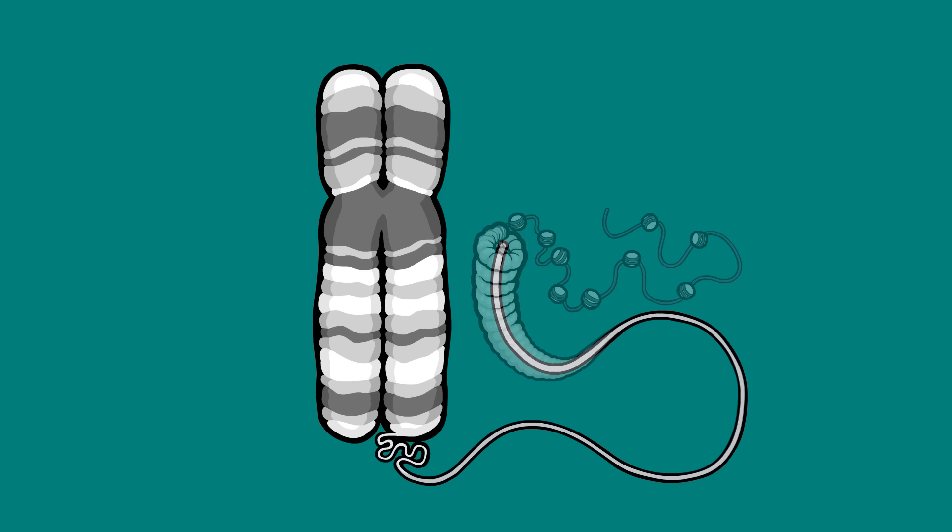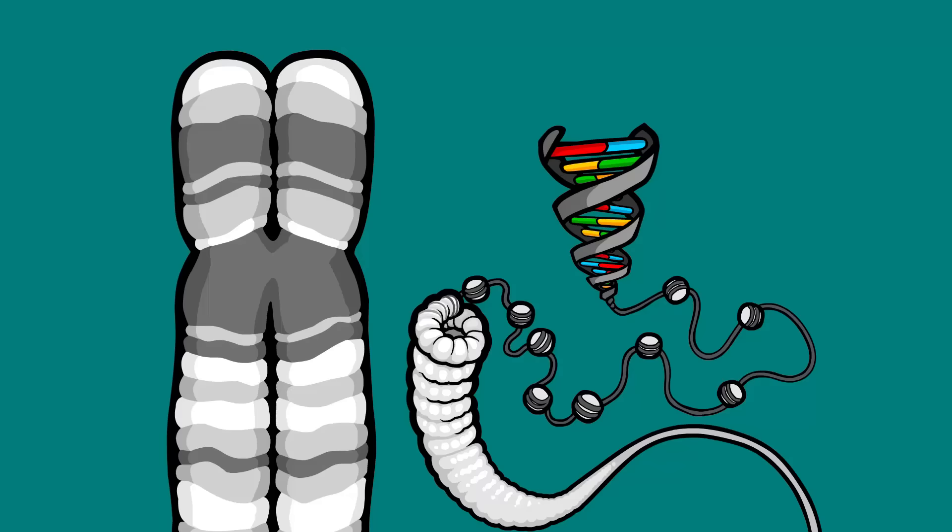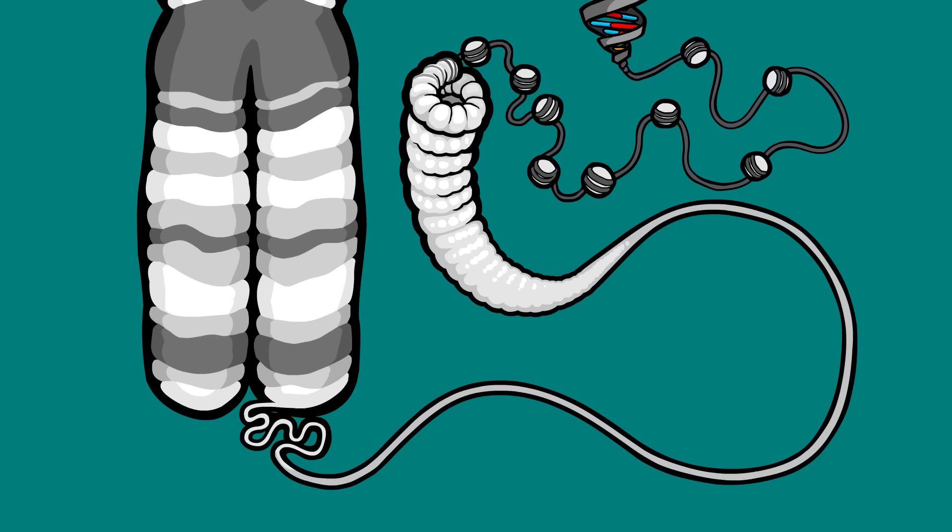Zoom in again, and you'll see that that fiber is a collection of protein orbs called histones, which are wrapped with a string-like structure. Zoom in on that string, and you'll find that this is the chain of DNA. It is extremely long — millions of nucleotides long — and often contains hundreds of genes along its length.